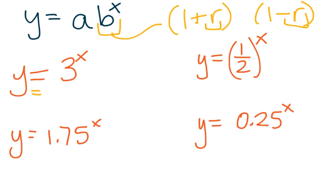y equals 3 to the x. We can rewrite this base as 1 plus 2 because 1 plus 2 equals 3. And that 2 is going to be the rate of change. That 2 actually represents 200%. So if you are multiplying something by 3 each time, you are adding 200% to it each time.